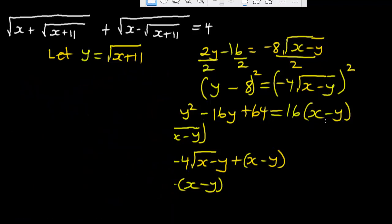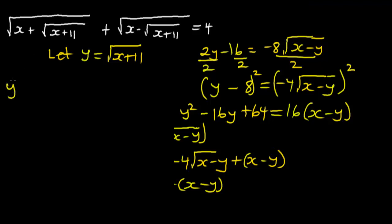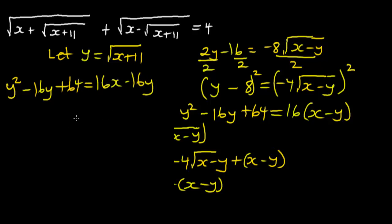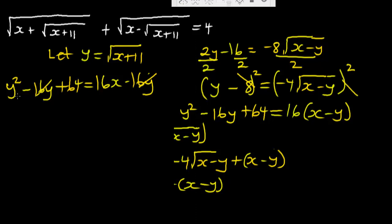Expanding, we have Y squared minus 16Y plus 64 equal to 16X minus 16Y. The minus 16Y on both sides cancel, leaving Y squared plus 64 equal to 16X.